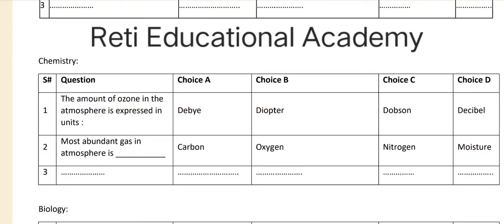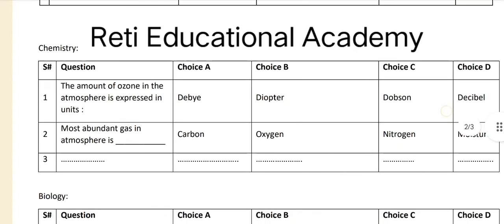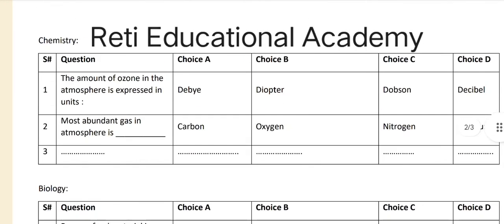Question number one: the amount of ozone in the atmosphere is expressed in units — Option A: Dy, Option B: Diopter, Option C: Dobson, Option D: Decibel. The correct answer is C — Dobson. Question number two: the most abundant gas in the atmosphere is — Option A: Carbon, Option B: Oxygen, Option C: Nitrogen, Option D: Moisture. The correct answer is C — Nitrogen.